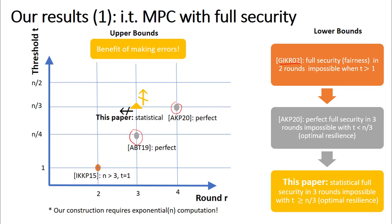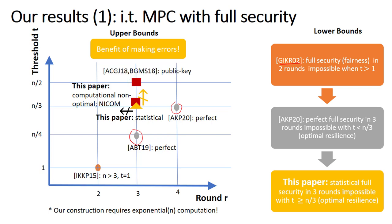Unfortunately, our construction requires exponential-in-n computation. Downgrading security to the computational setting, we present a protocol which is efficient for all functions, not just for log-space functions. Our protocol relies on non-interactive commitment schemes, and by plugging in statistical non-interactive commitment schemes in the CRS setting, we obtain everlasting security. Our protocol has to be compared with existing protocols that rely on public key primitives.